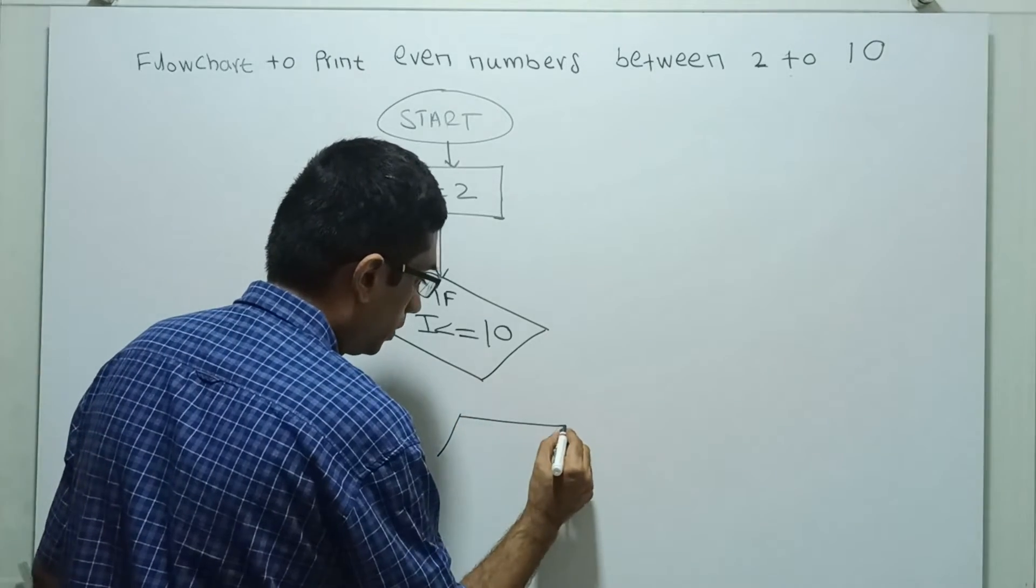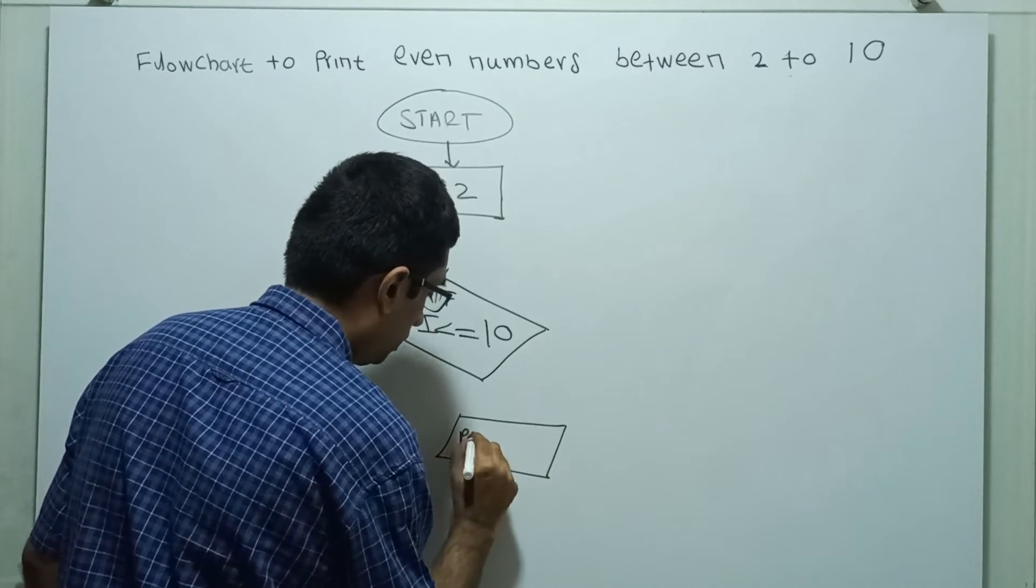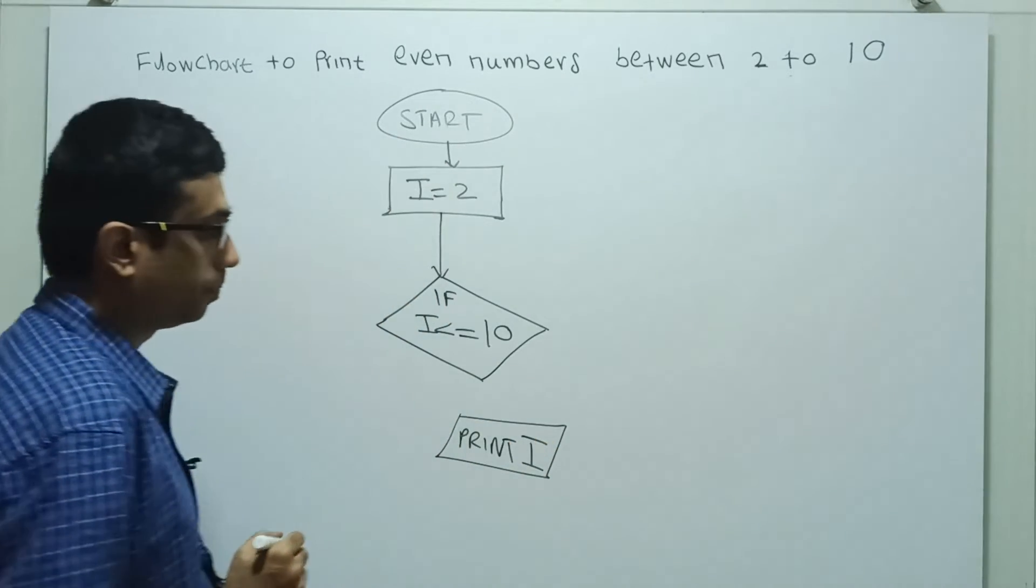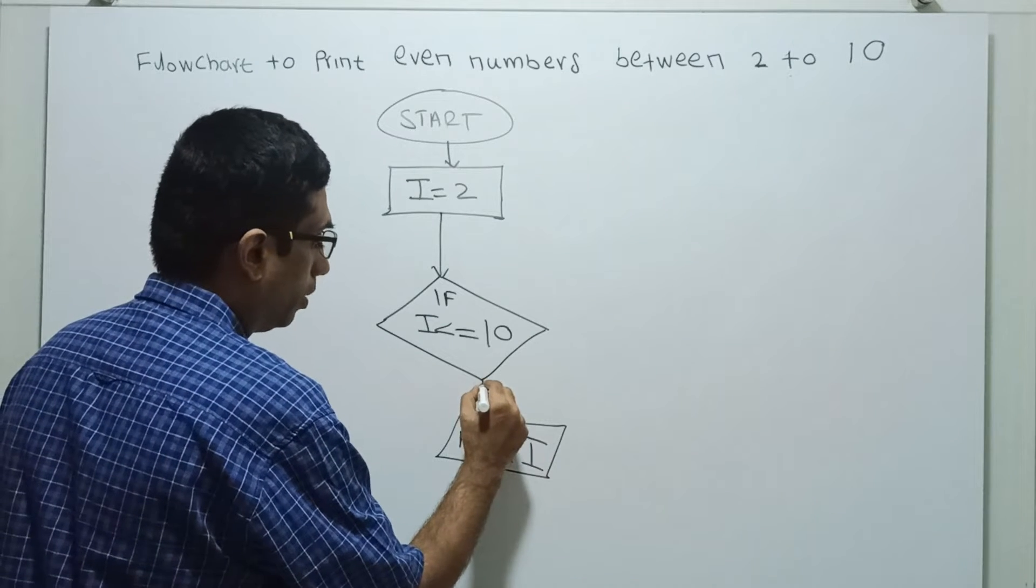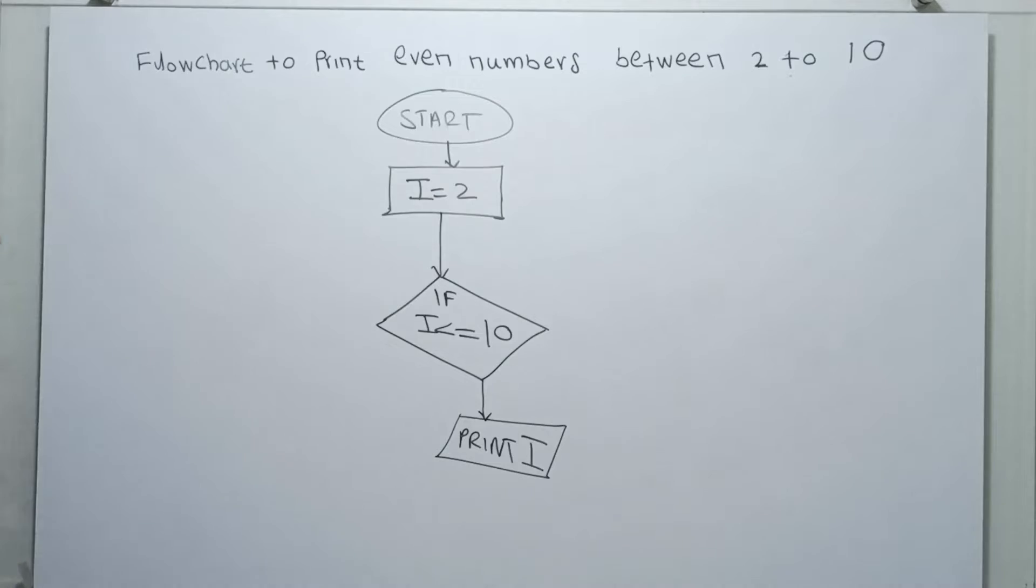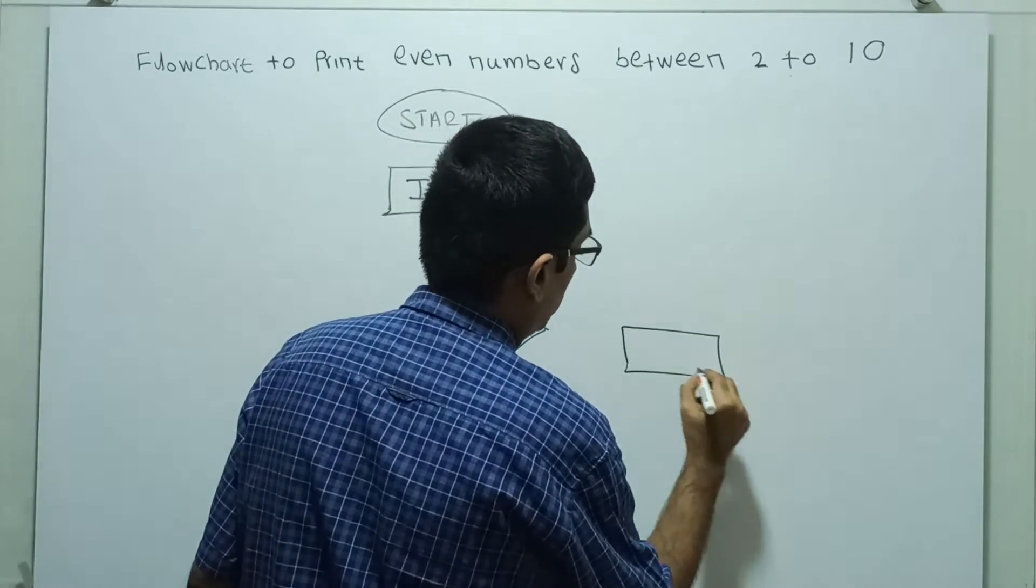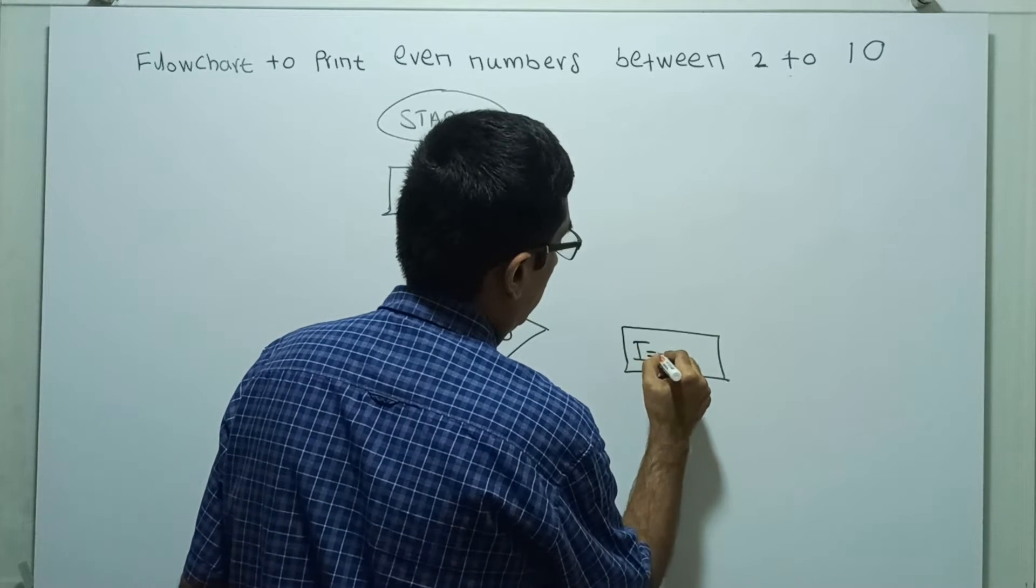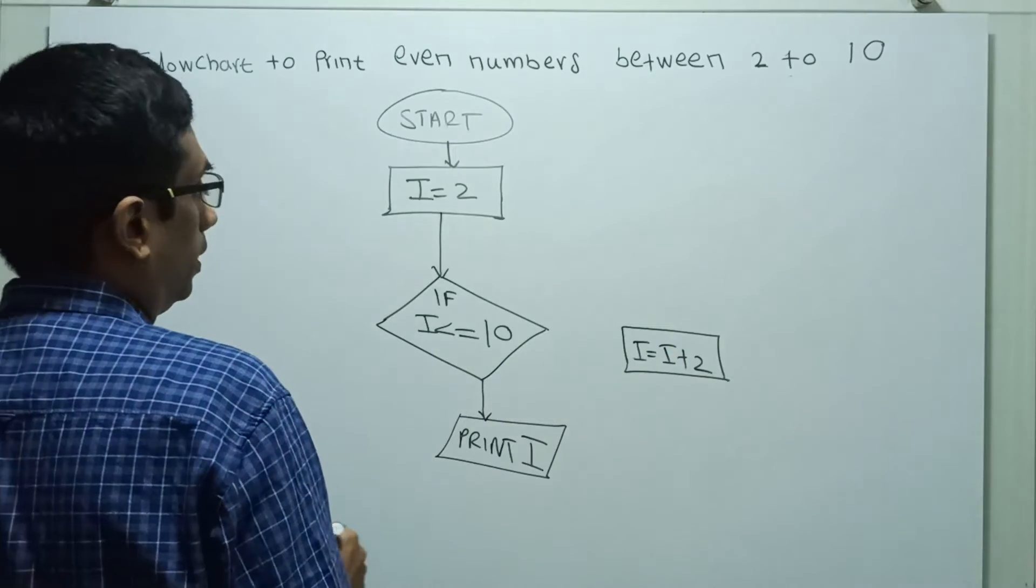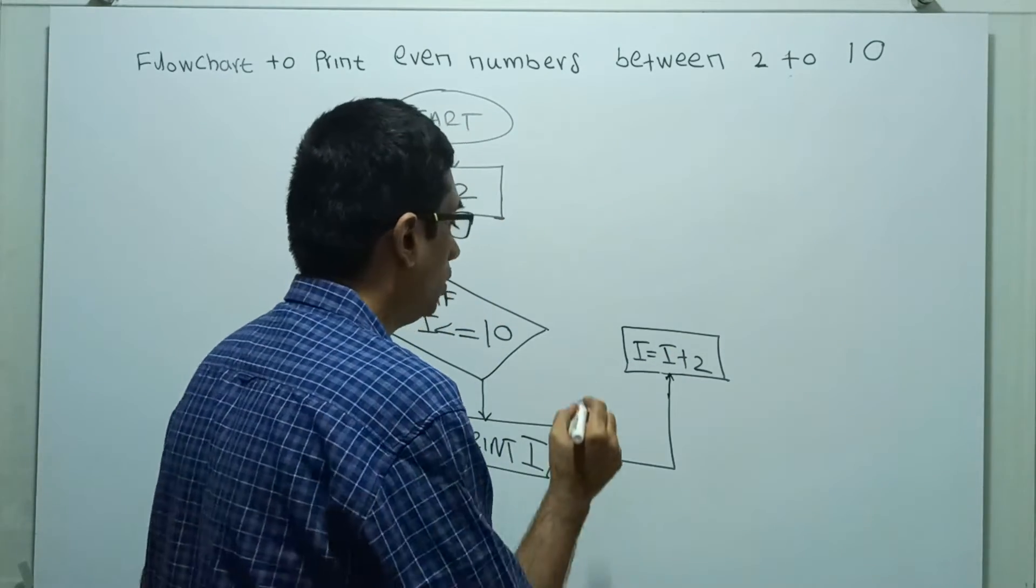First, I am printing i. Print i. The parallelogram is for the input output symbol. Then I am incrementing i equal to i plus 2.